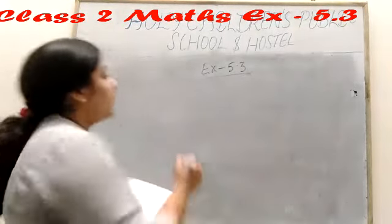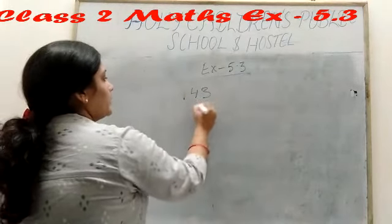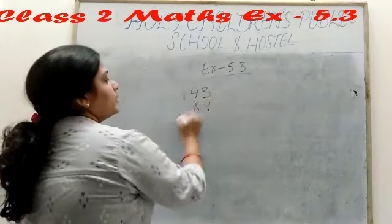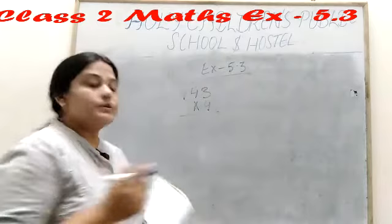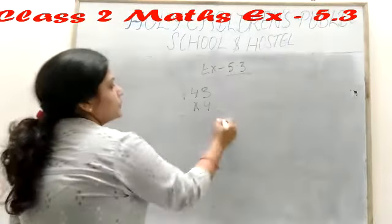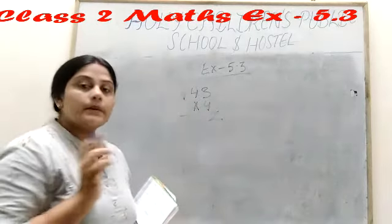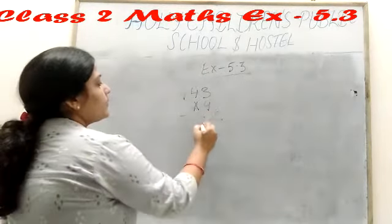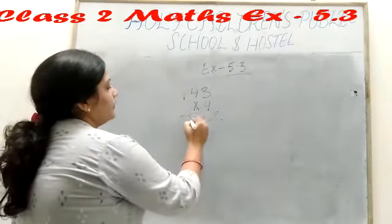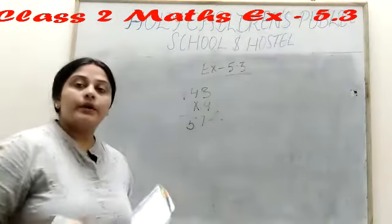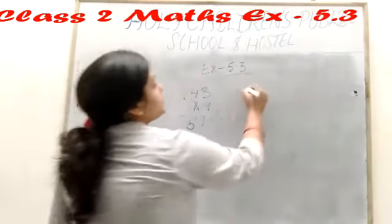Our next question is 143 into 4 is equal to. So 4 3 is 12. We can write here 2, 1 carry. 4 4 is 16 plus carry 1, 17. We can write here 7, 1 carry. 4 1 4 plus carry 1, 5. Clear story. 143 into 4 is equal to 572.